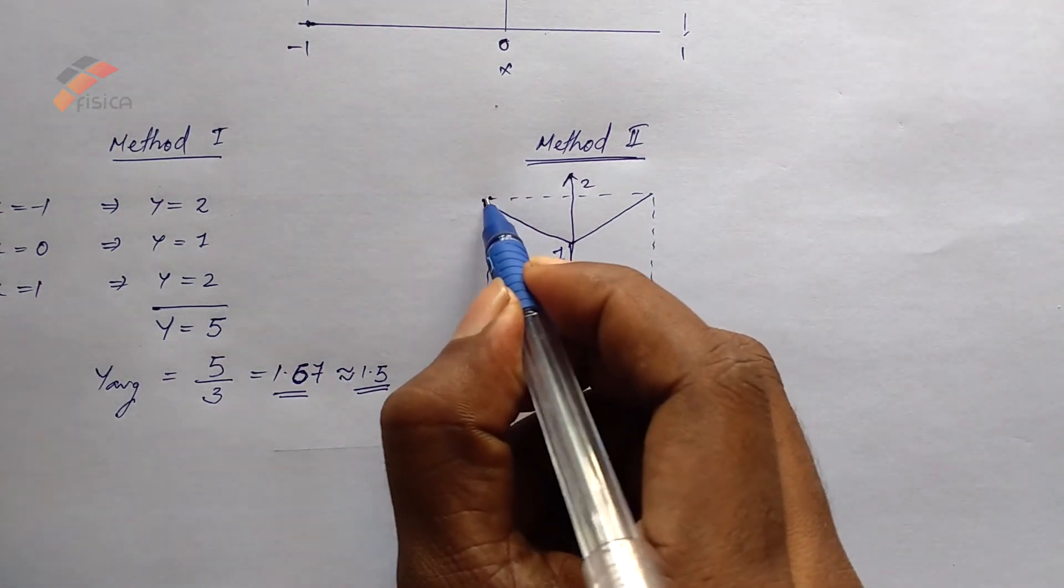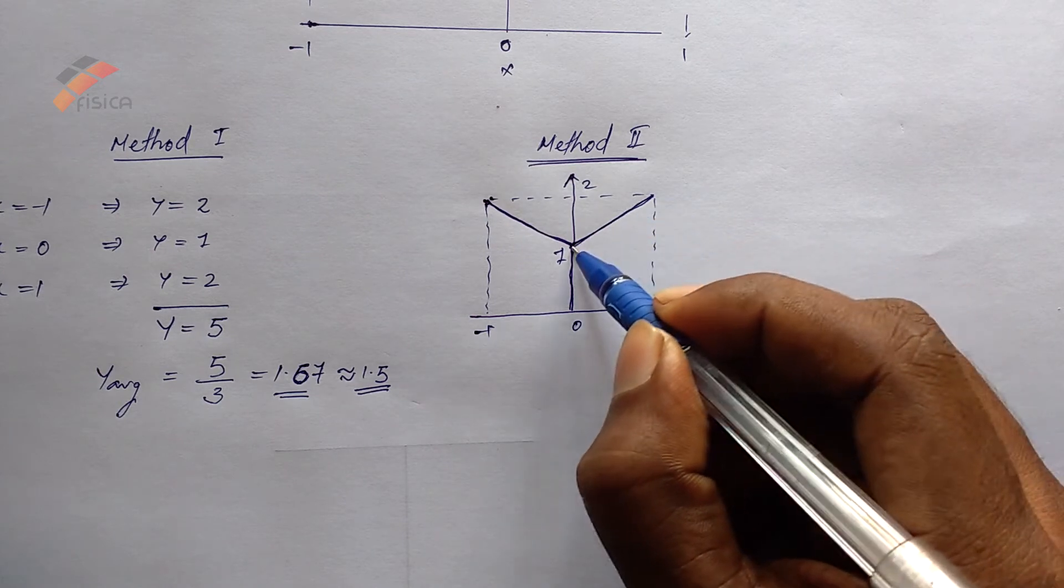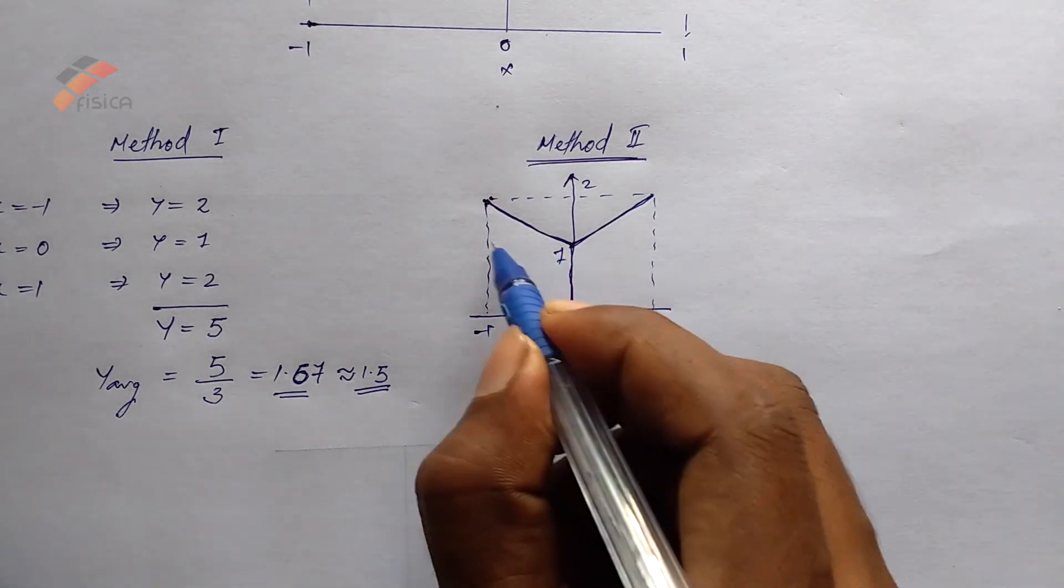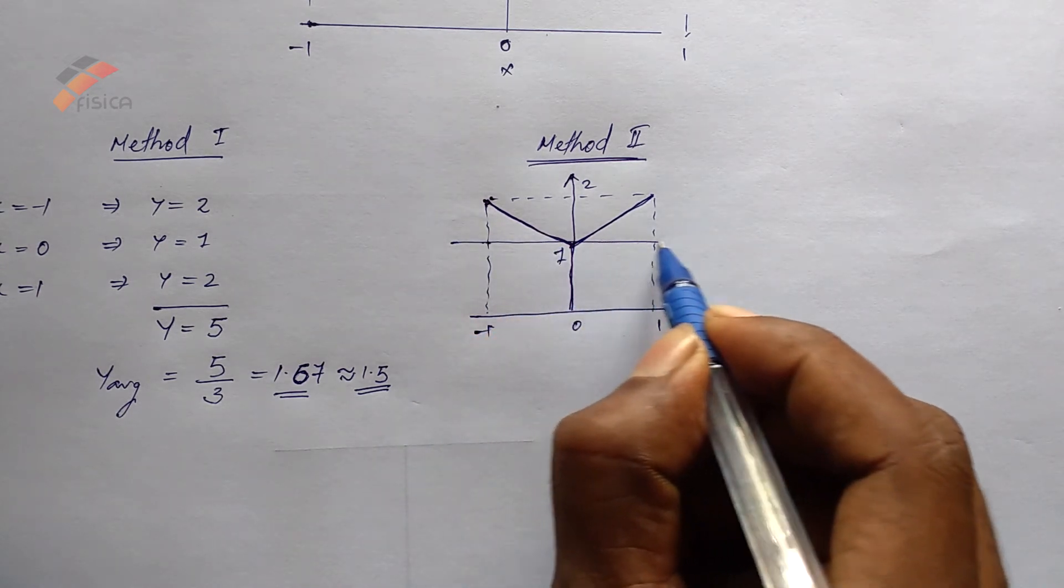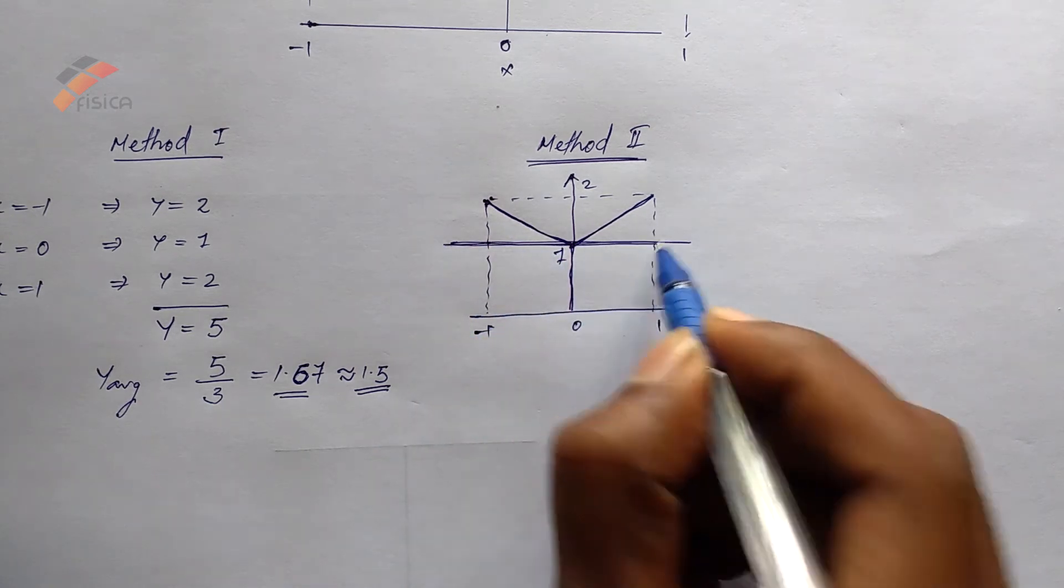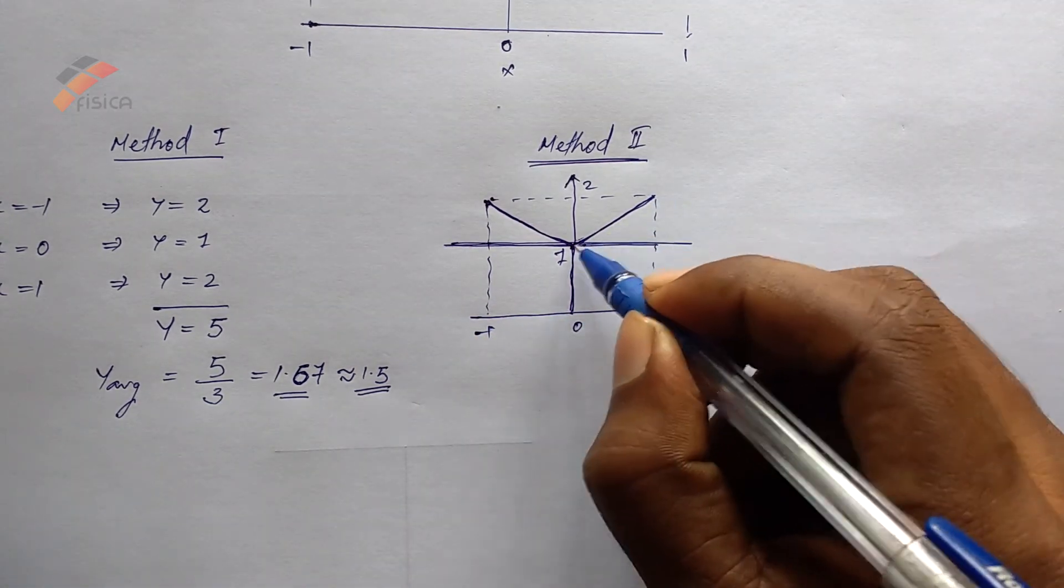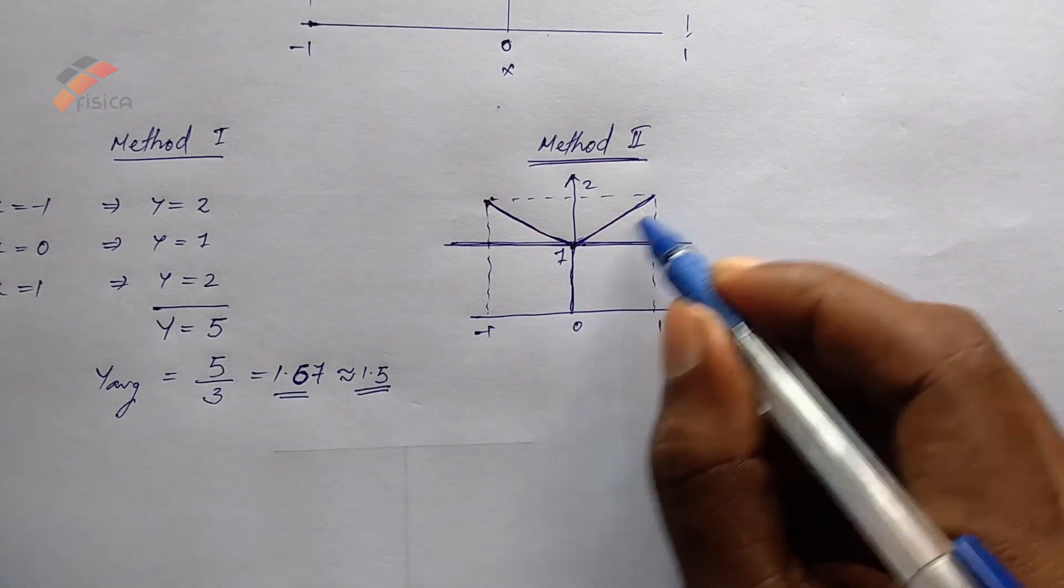Here, this is the variation of y value. In this graph, the y value is definitely greater than 1. That is, average y value is definitely greater than 1, because the curve is above the value 1. So definitely, it has a value greater than 1.